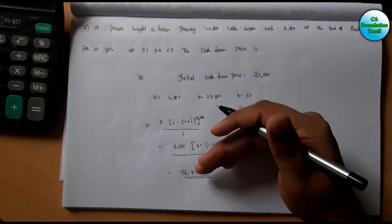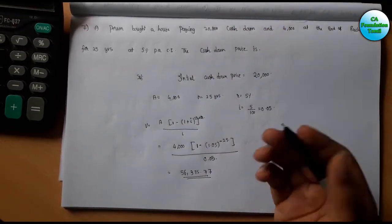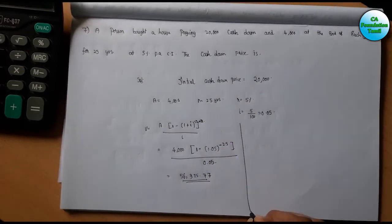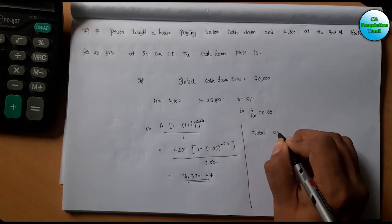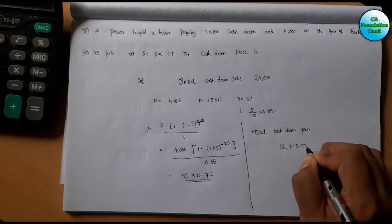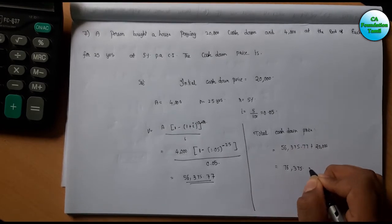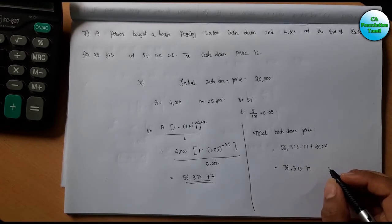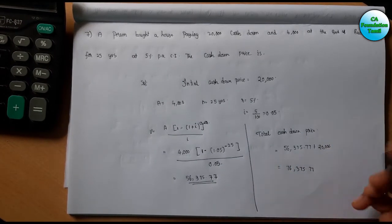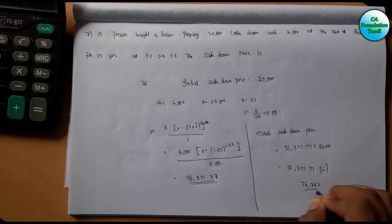The total cash down price equals the present value of installments plus the initial cash payment: 56,375.77 plus 20,000. That gives approximately 76,375.77, which is nearest to Option C, 76,392. So the answer to the 7th problem is Option C: ₹76,392.